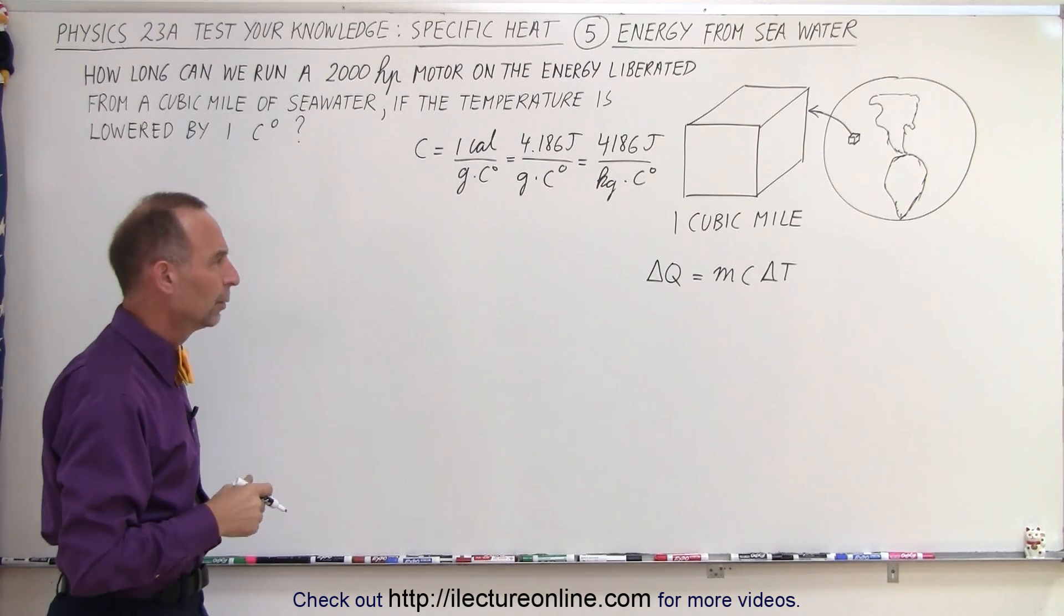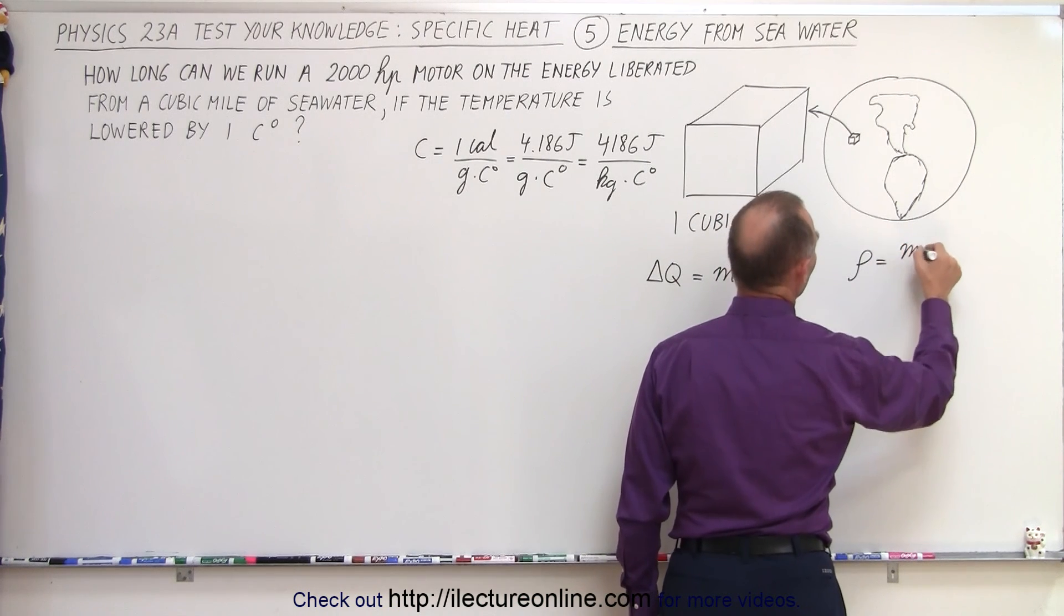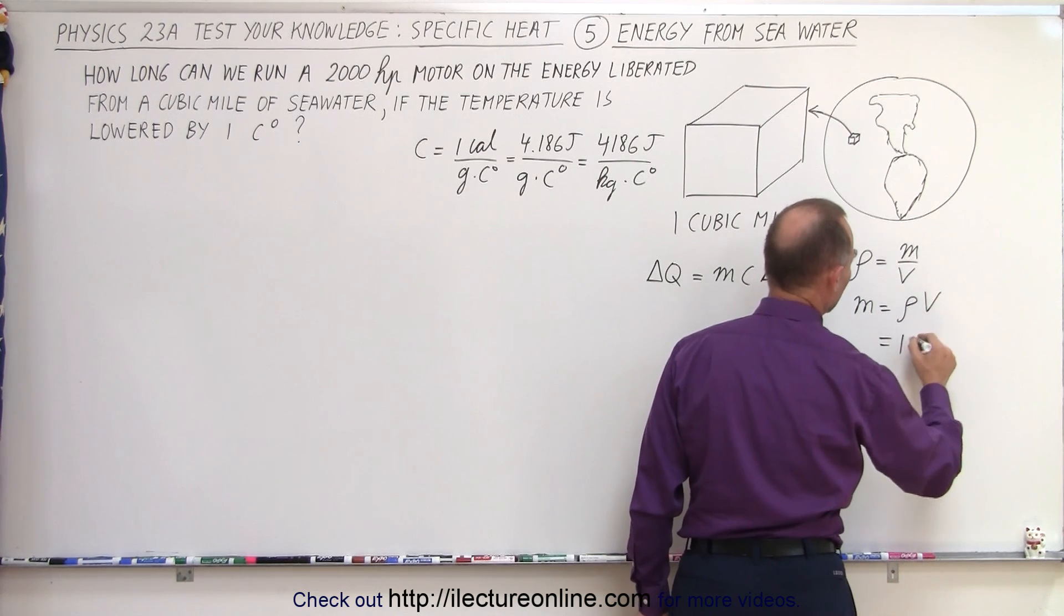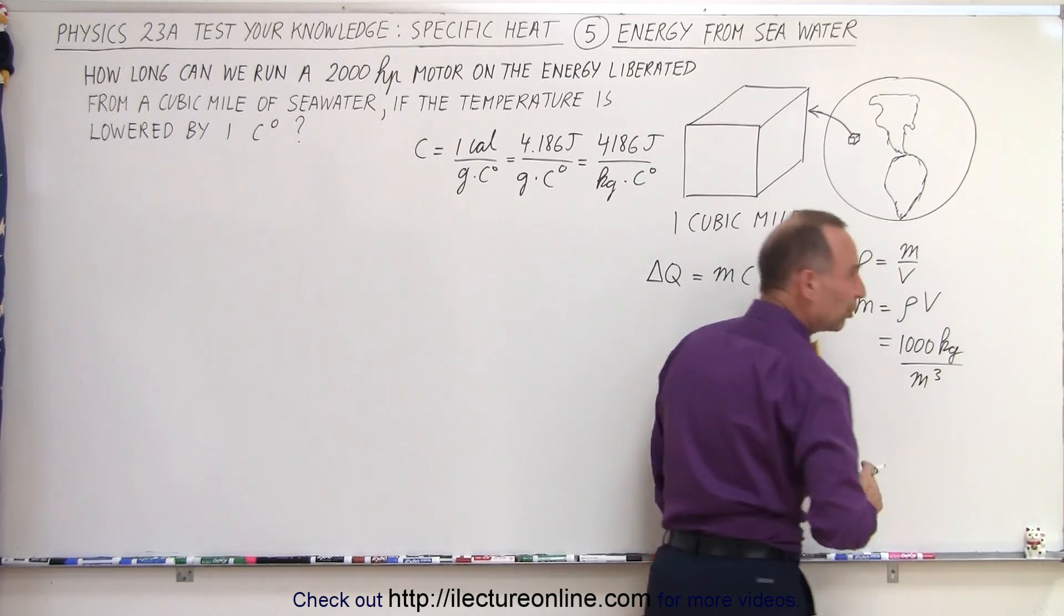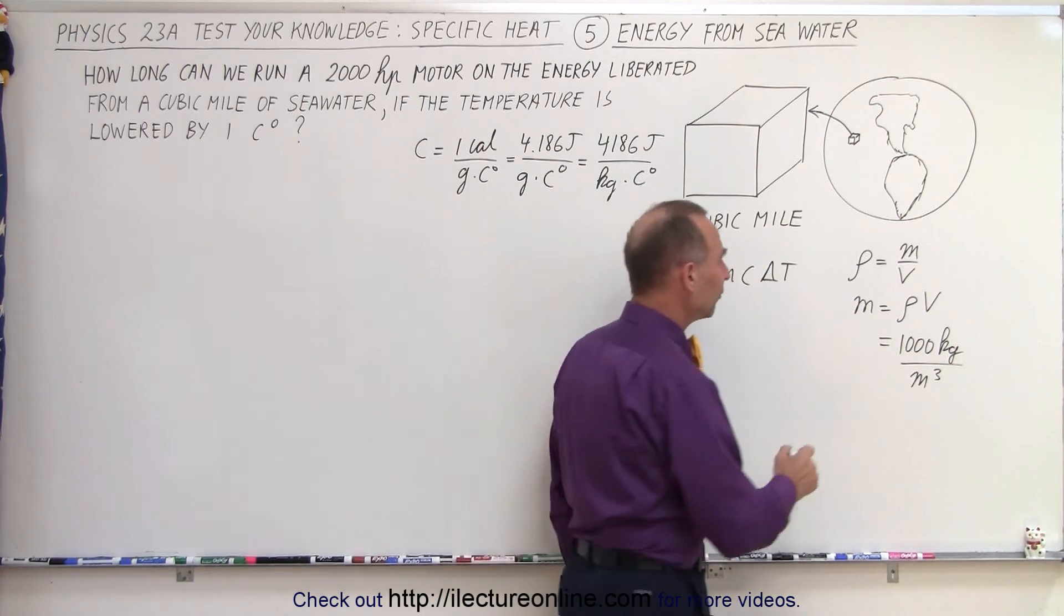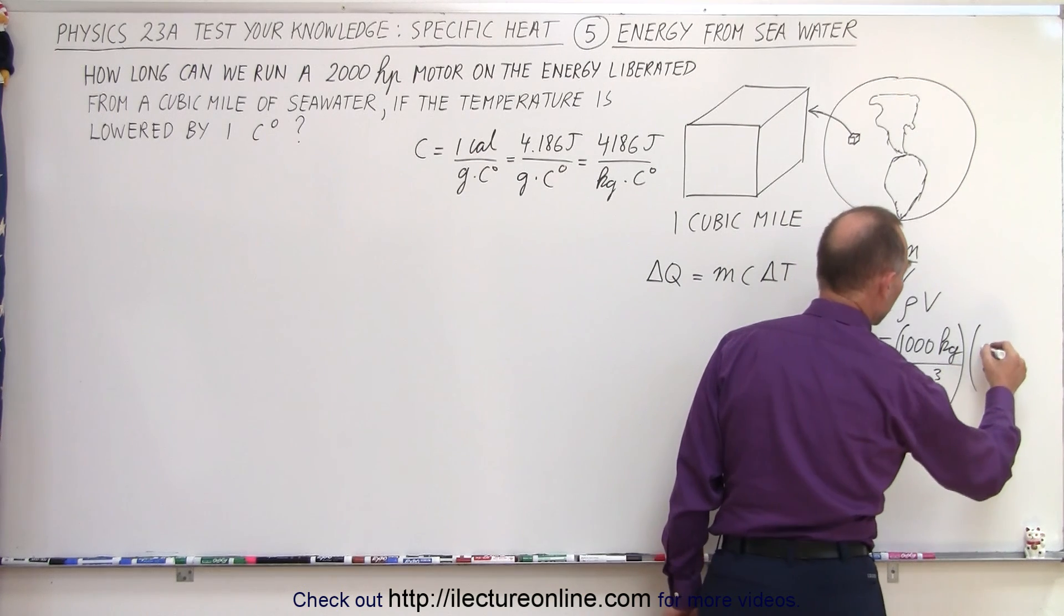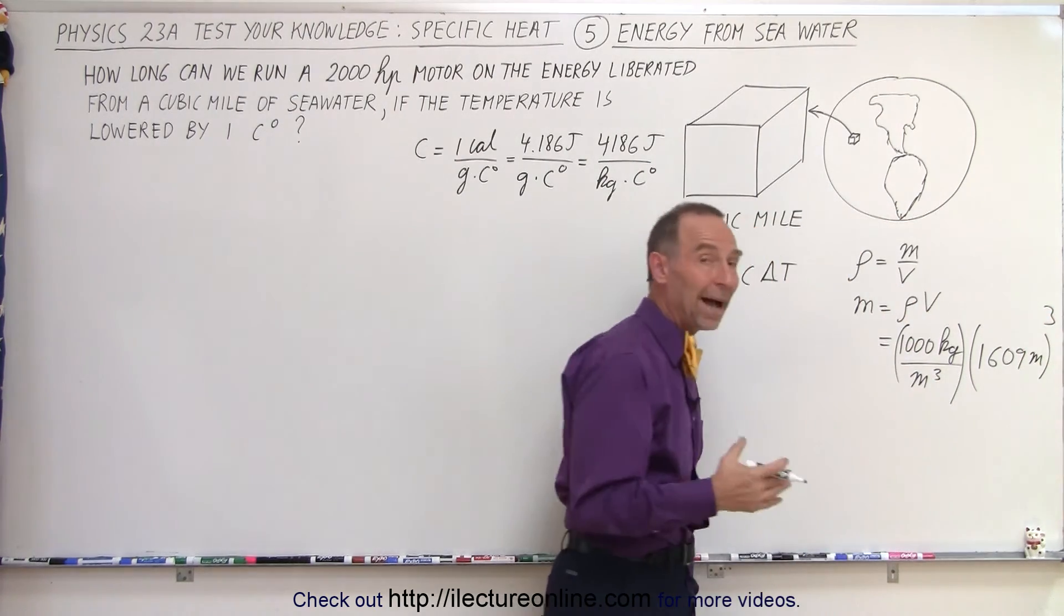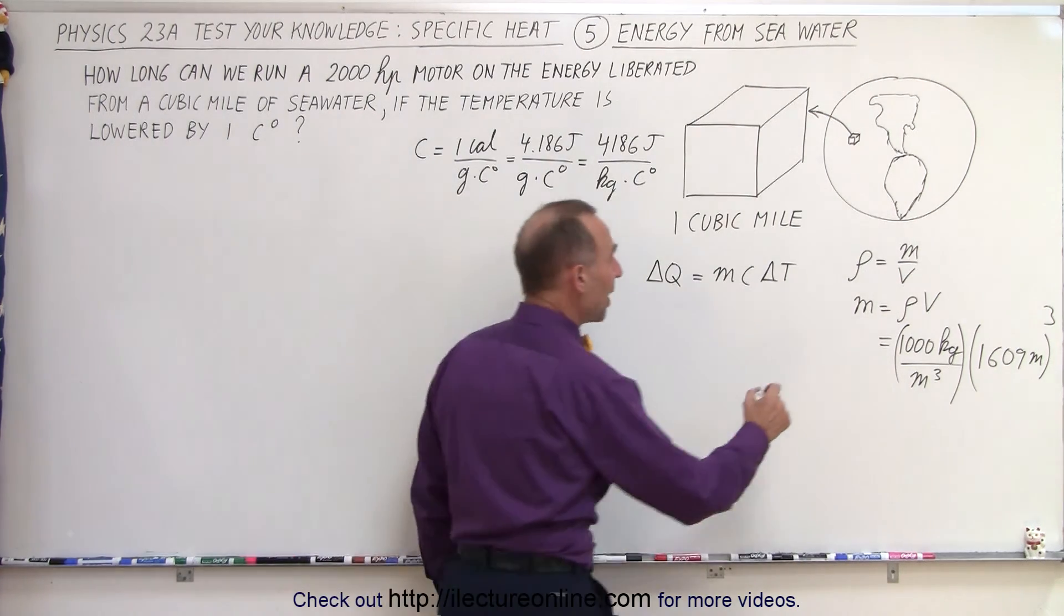How about the mass of water? Well we can use the equation that the density is equal to the mass divided by the volume which means the mass is equal to the density times the volume. If we take the density to be 1,000 kilogram per cubic meter - I know that the density of seawater is 1,030 kilograms per cubic meter but let's just keep it simple - and the volume would be equal to a cubic mile. A cubic mile would be 1,609 meters cubed because a mile is equal to 1,609 meters. That would be the mass of the seawater.